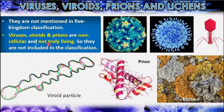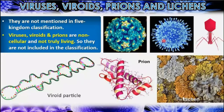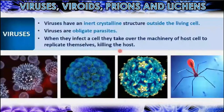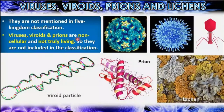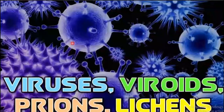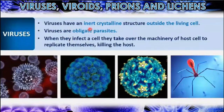Viruses, viroids, and prions are non-cellular and not truly living, so they are not included in the five kingdom classification — this is an important point from an examination perspective. Viruses have an inert crystalline structure outside the living cell. They are obligate parasites; when they infect a cell they take over the machinery of the host cell to replicate themselves, often killing the host.